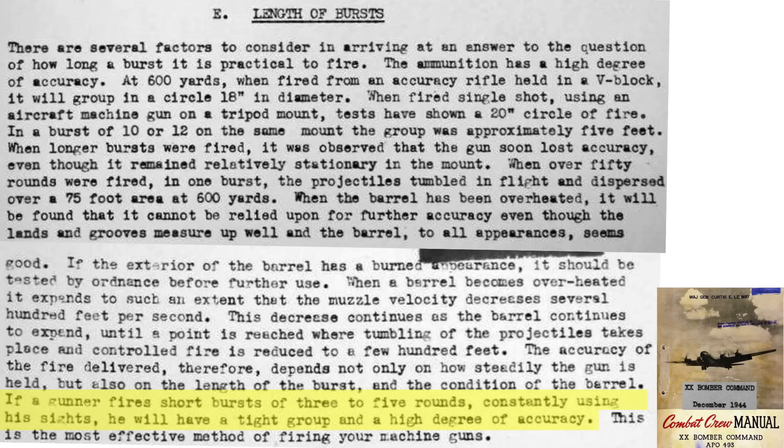The best tight group strikes are obtained when firing a three to five round burst. A five-round burst equates to a duration of around 0.4 seconds. A controlled, sighted, 0.4-second burst is the most effective and accurate method of machine gun fire.